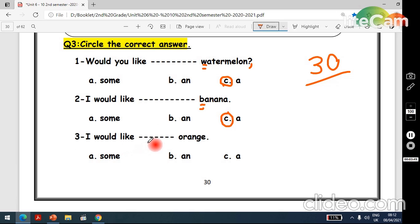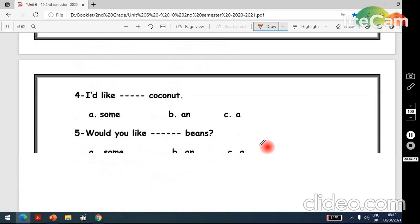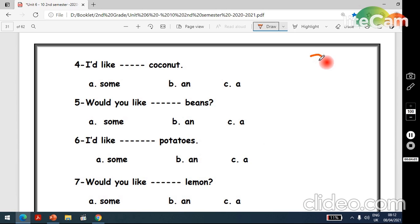Now what about 3? I would like orange. Some, an, or a? Yes, an orange. Here we have one orange, okay, and it begins with a vowel. Now page 31. I would like coconut. Coconut, one coconut, and it starts with a consonant. Some, an, or a? Yes, a coconut.